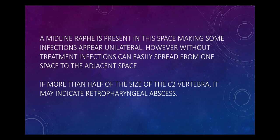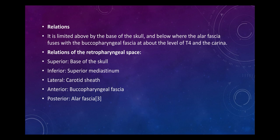Without treatment, infections can easily spread from one space to the adjacent. If more than half the size of the C2 vertebra is seen in the retropharyngeal space, it may indicate a retropharyngeal abscess. The retropharyngeal space is limited above by the skull base, below where the alar fascia fuses with the buccopharyngeal fascia at about the level of T4 and the carina. Relations: above — skull base; below — superior mediastinum; lateral — carotid sheath; anterior — buccopharyngeal fascia; posterior — alar fascia.